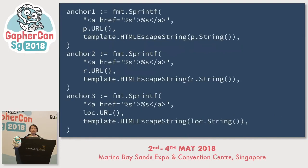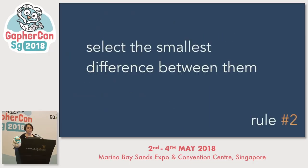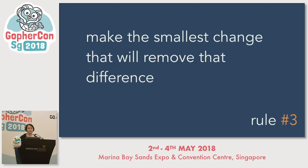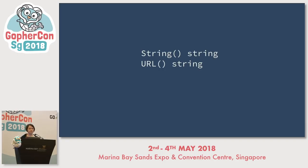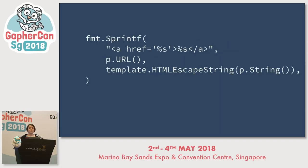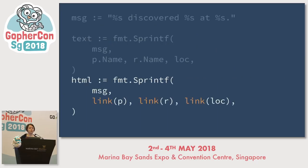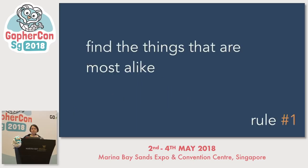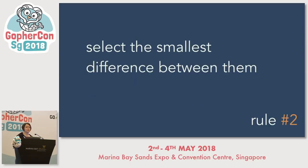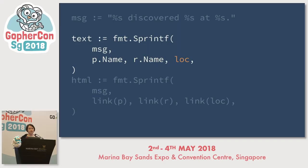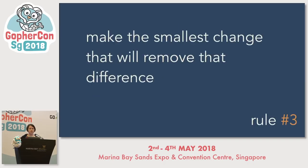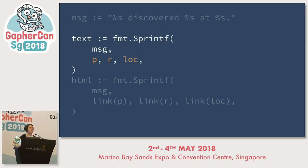A striking similarity between the three anchor tags is that each one calls URL and String on the game type it's operating on, and the difference is just the game value itself. So these two methods make up a tiny interface — it just hasn't been defined yet. We need a name for it. Because we're defining HTML anchor tags, we're thinking: linker. And now we can extract the creation of the anchor tag to a function that takes a linker, which completely collapses the code for making the three HTML links into one little bit of code. Looking at the generation of the plain text version, we have that same inconsistency where struct fields are referenced on the first two arguments and the String method is called implicitly on the last one. We can take those struct fields and remove them, making all the arguments consistent.